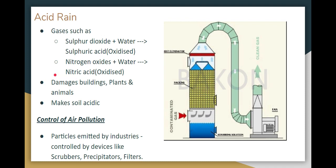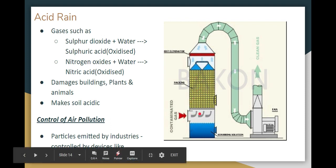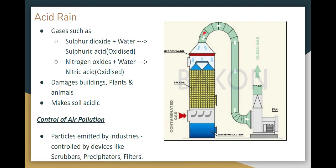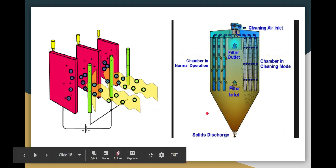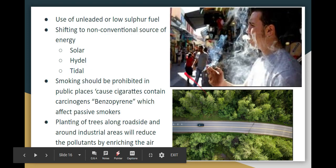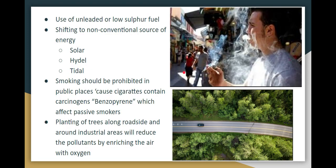For air pollution control, industries that emit particles can use scrubbers, electrostatic precipitators, and filters. A scrubber works by passing polluted gas through a scrubbing solution, which traps the polluting particles and allows clean gas to exit. An electrostatic precipitator uses the properties of cations and anions to remove polluting particles from gas. Filters can also be used. Additionally, using low-sulfur and lead-free fuels helps reduce pollution.